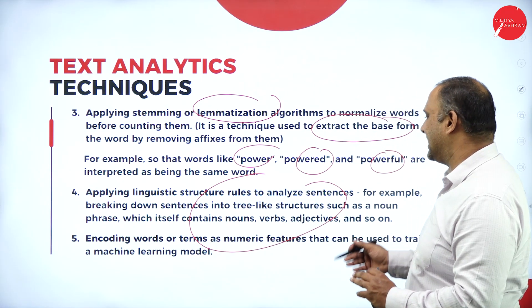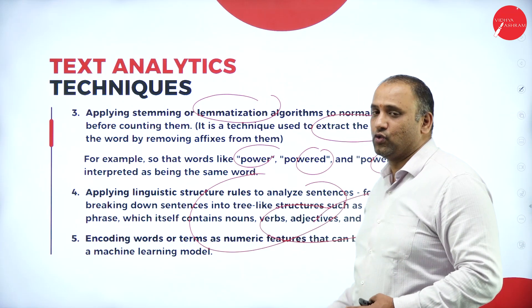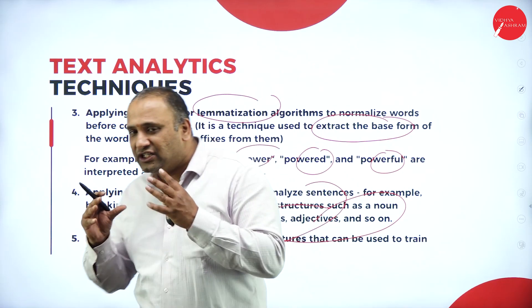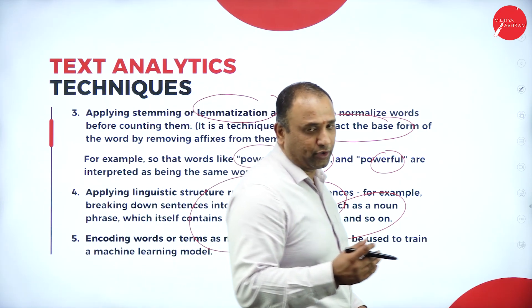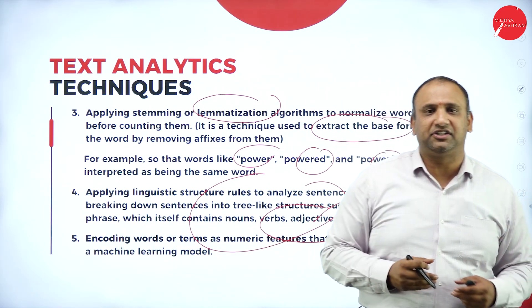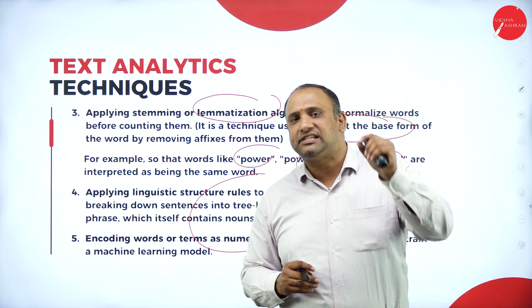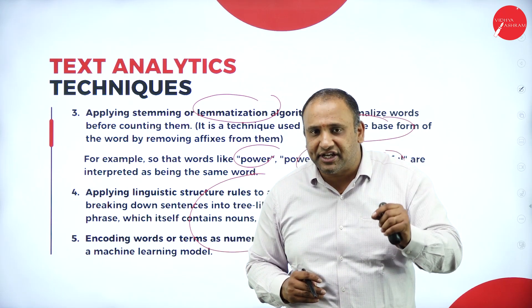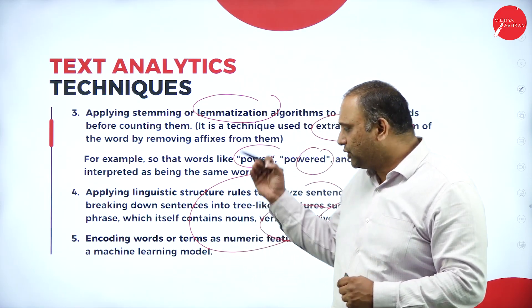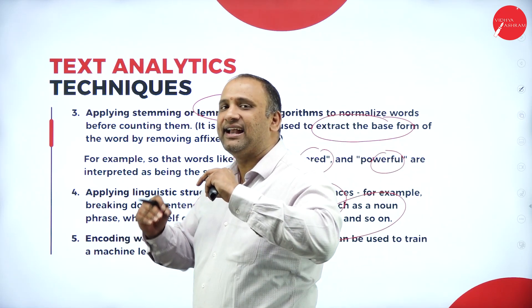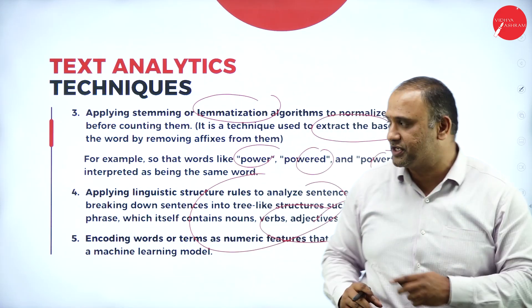Linguistic structural rules are very important to analyze a sentence — for example, noun phrases, verbs, and adjectives. Encoding words is also a part of this, through which we can train the machine learning model. Whenever we apply these linguistic structures, we need to train the system slowly and steadily to understand words, annotation, pronunciation, meaning, and usage patterns, so the computer starts understanding the natural language spoken by the user.